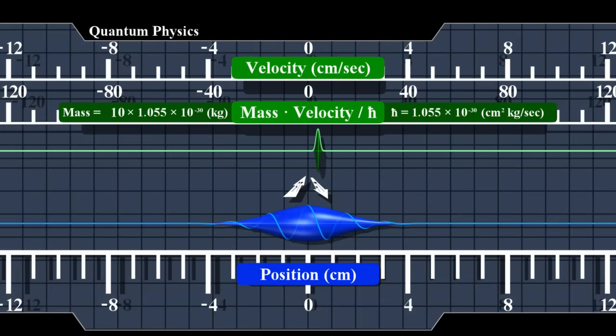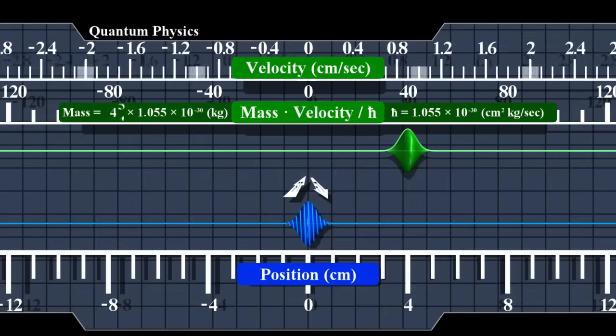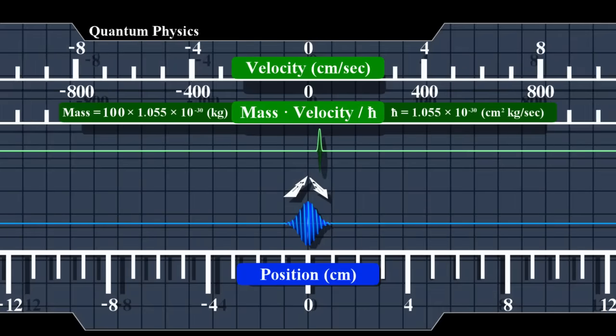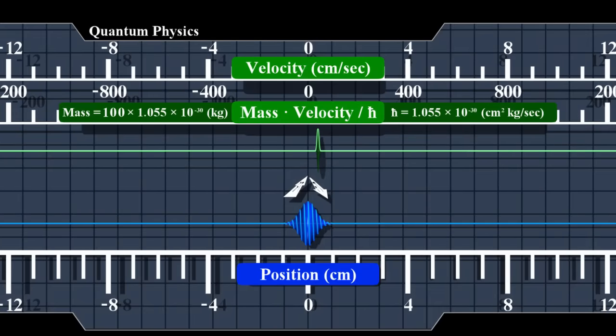Now let's reduce the uncertainty in position. And increase the velocity back to 4 centimeters per second. We'll repeat the same steps again. Increase the mass. Shrink the image. Reduce uncertainty in position. And increase velocity.